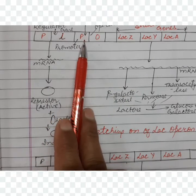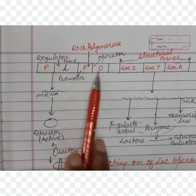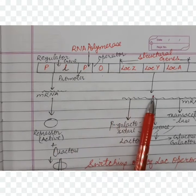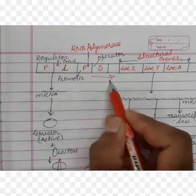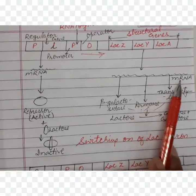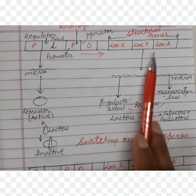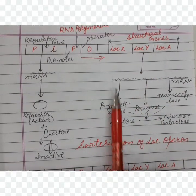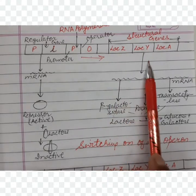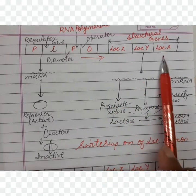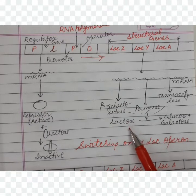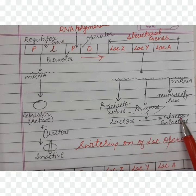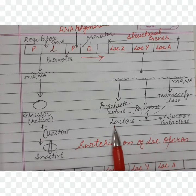Now RNA polymerase binds itself to the promoter region and starts transcribing messenger RNA. The three structural genes transcribe messenger RNA, and from each gene one enzyme is produced: from lac Z, beta-galactosidase; from lac Y, permease; and from lac A, transacetylase. By the activity of these enzymes, lactose is converted into glucose and galactose — so this operon is for the metabolism of lactose.